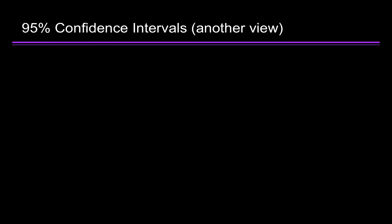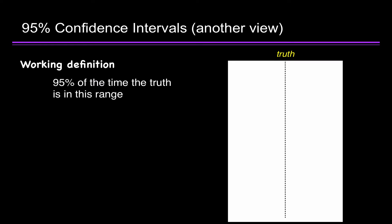Here's another view of the 95% confidence interval. Let's come back to our working definition: 95% of the time the truth is in this range. So here's the truth. We don't know what it is. We just know it's out there. Here's a study. You can see what the primary finding is. That's in the box. And you can see the confidence interval on either side of the box. And you can see that the confidence interval in fact includes the truth.